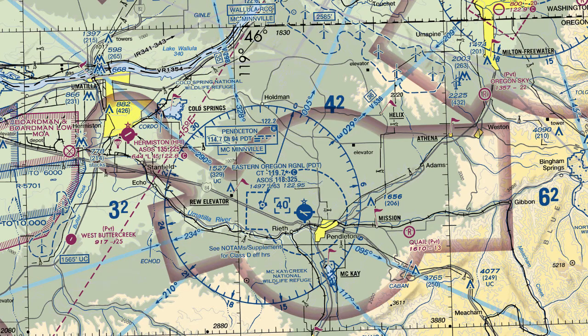Class Delta airspace is a controlled airspace and this is probably one of the first airports you will go to that has a control tower. These are usually smaller regional airports that don't have a lot of traffic — they might have some airline traffic, but for a lot of them it's mostly general aviation airplanes.